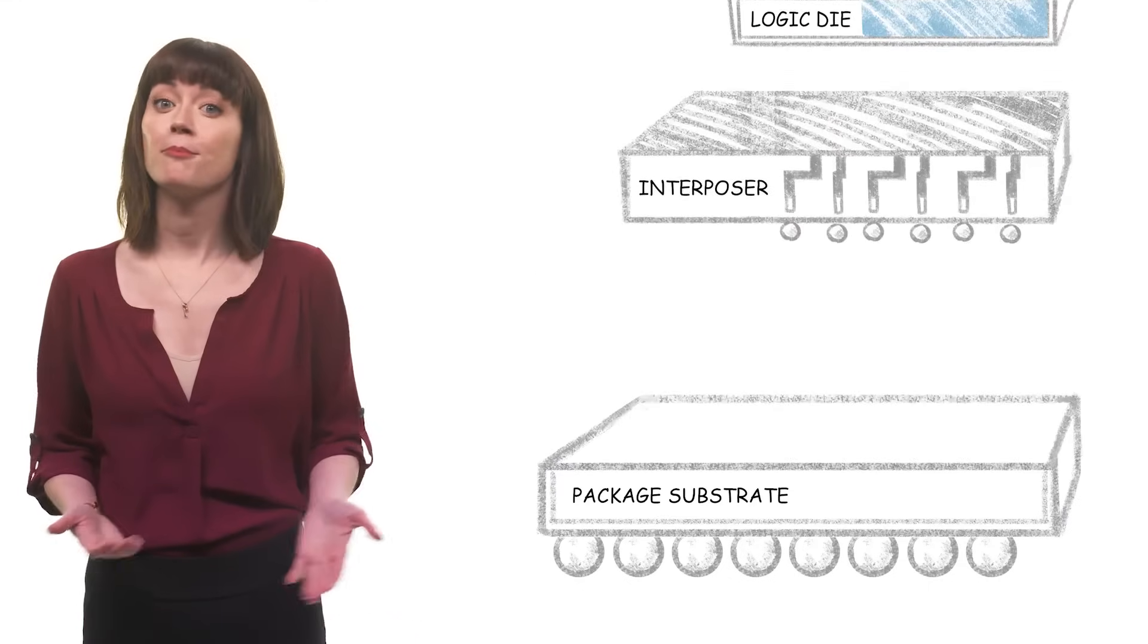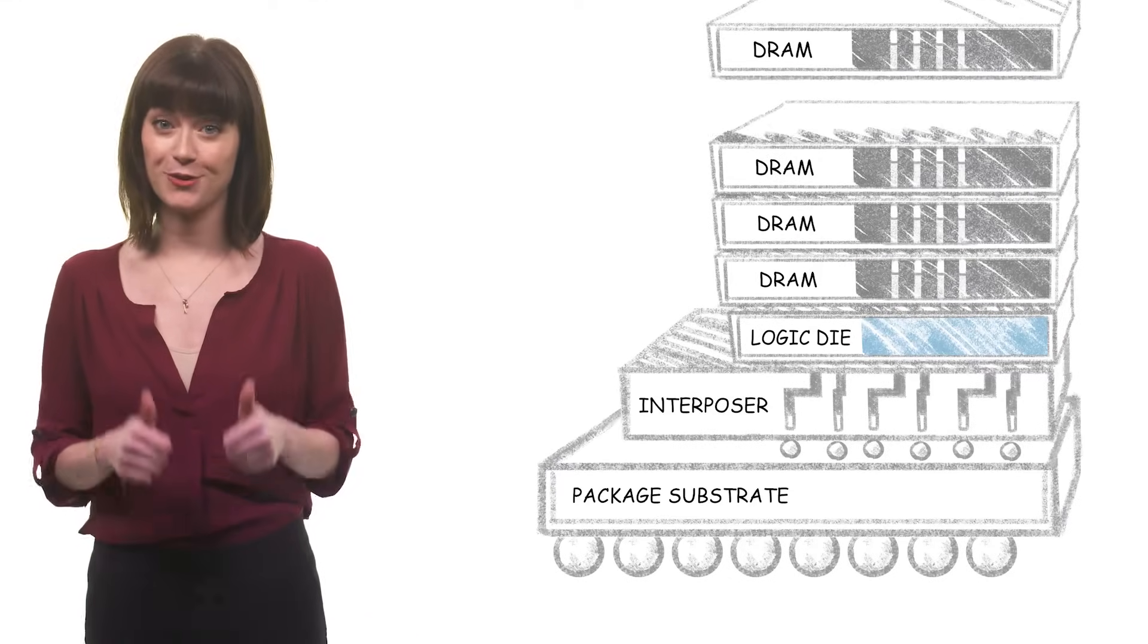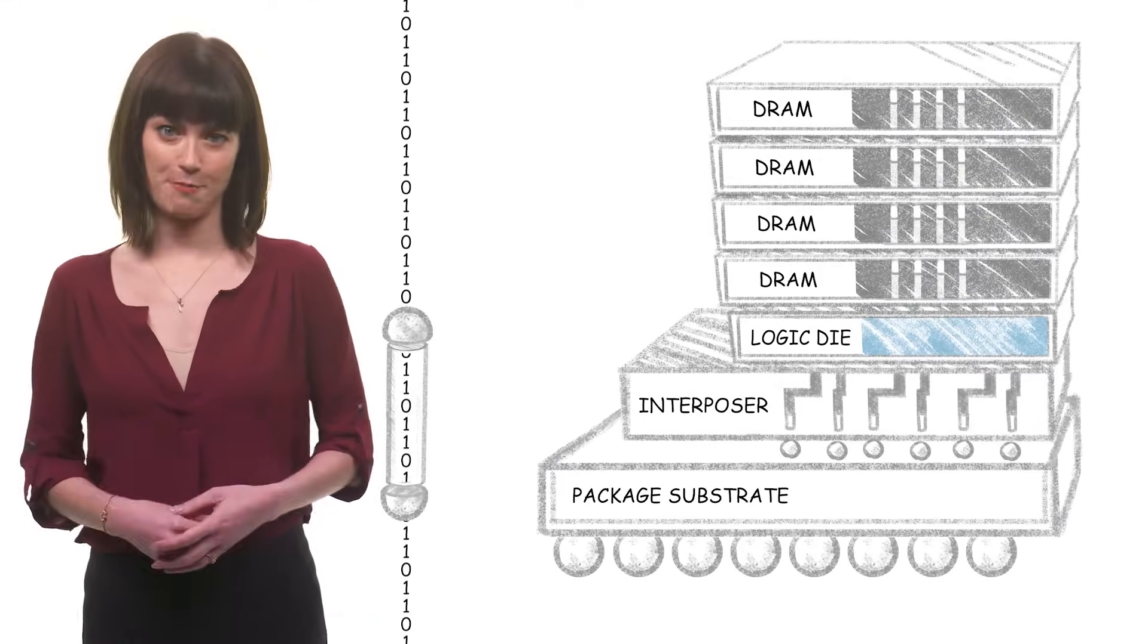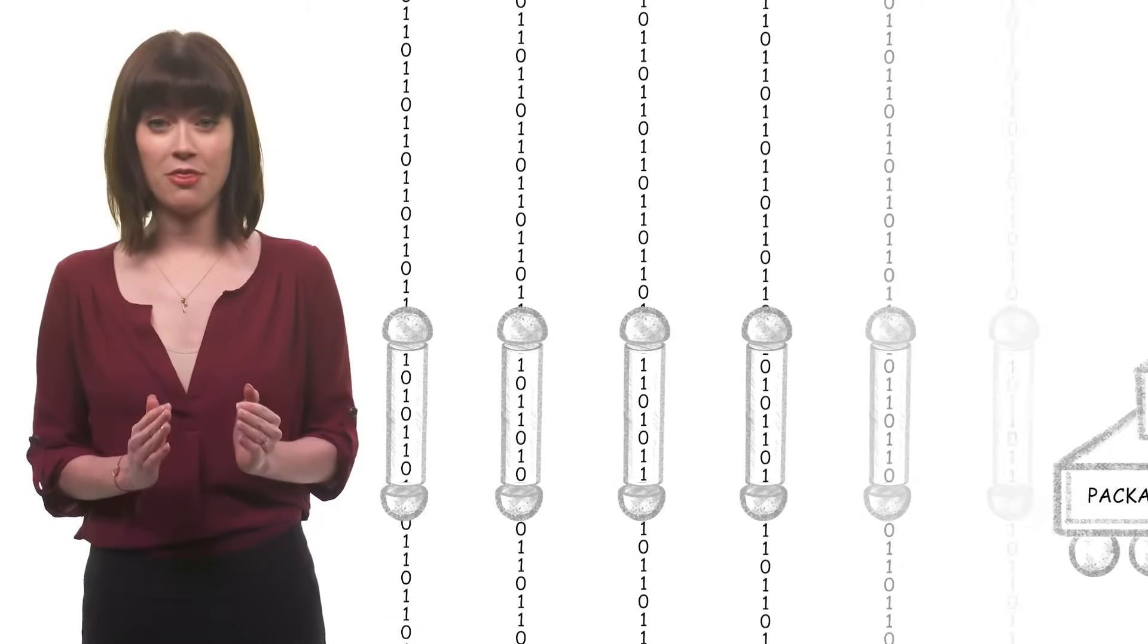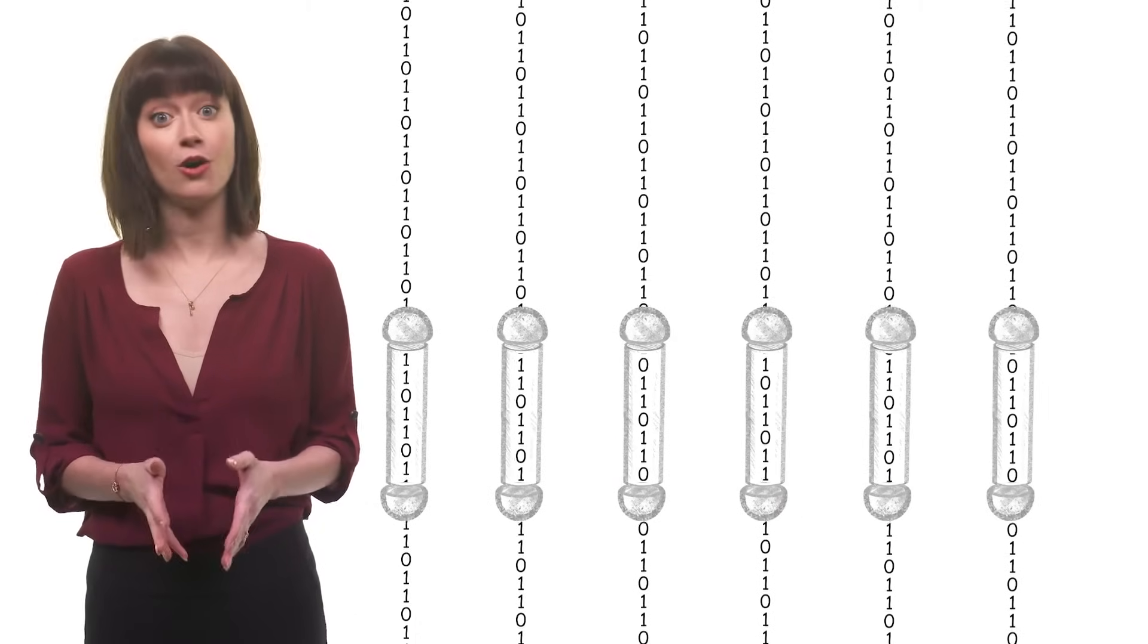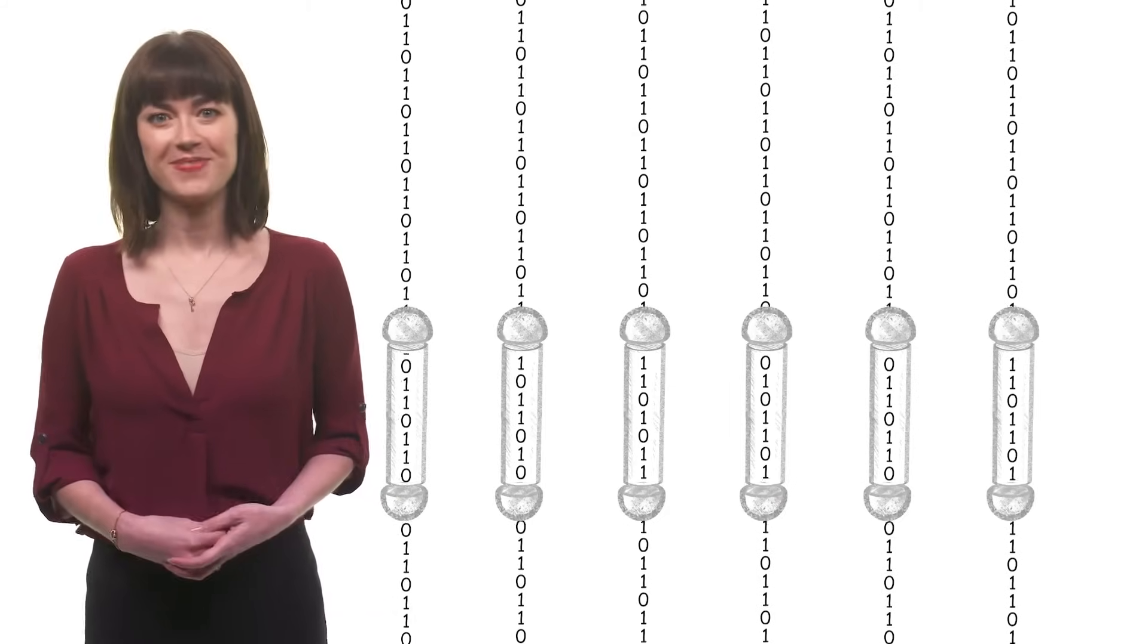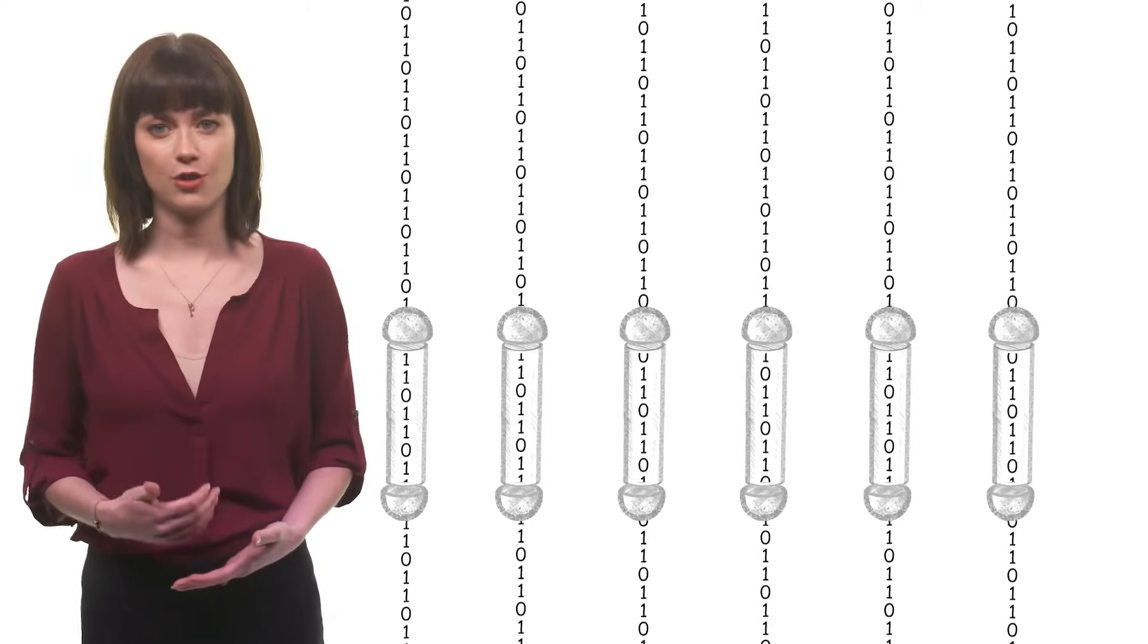How? By putting multiple memory chips into a vertical stack and moving data through them like elevators in a skyscraper. Only in this case, we're talking about thousands of elevators, called through-silicon vias, or TSVs for short. Each transports a single stream of bits.